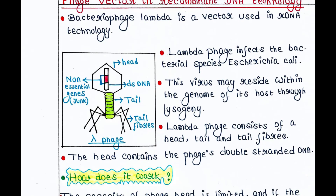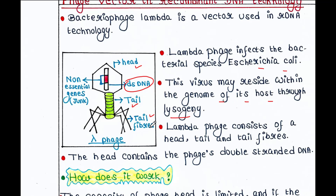Lambda phage infects the bacterial species E. coli. This lambda phage consists of a head, a tail, and some tail fibers. The head contains the phage's double-stranded DNA. This virus may reside within the genome of its host through lysogeny.